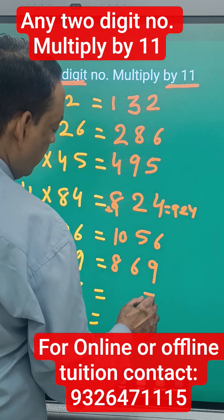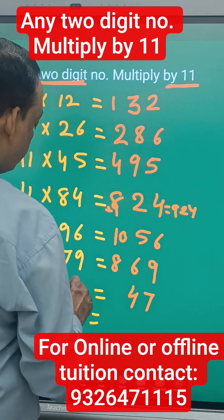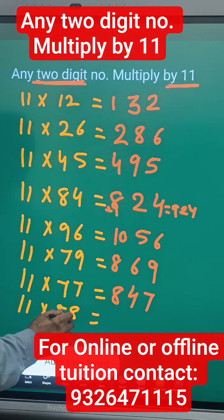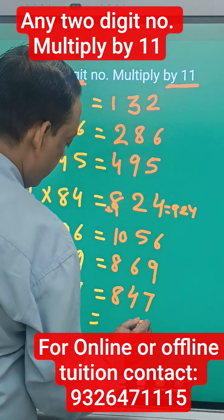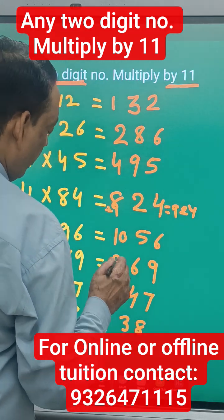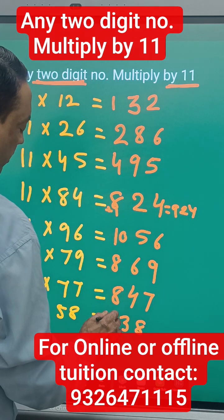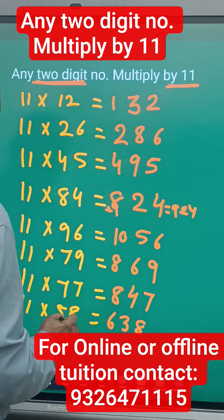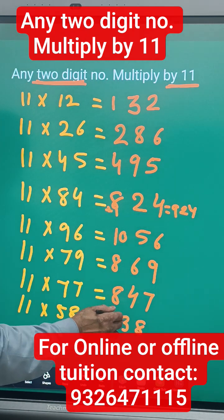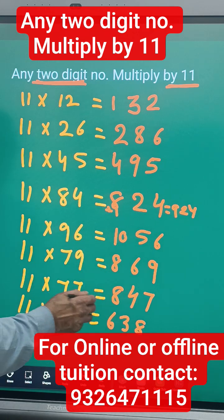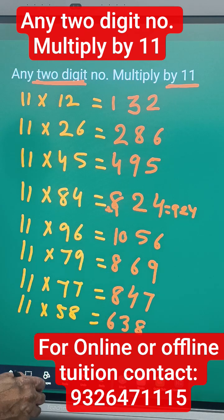The next number, 85: 8 plus 5 is 13. So 8 here, 8 plus 5, 13's 3, 1 carry. And 8 plus 1 - 5 plus 1 becomes 6. So 8 and 8 plus 5, 13's 3, carry 1, and 5 plus 1 is 6.